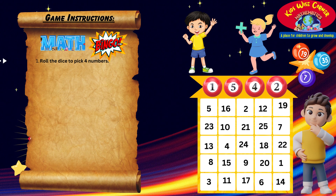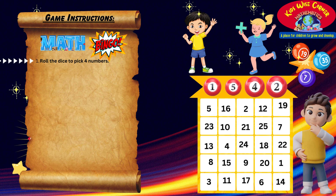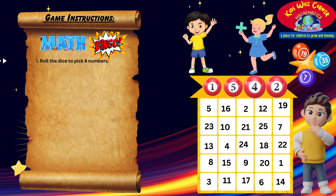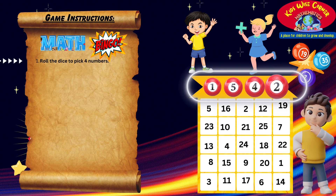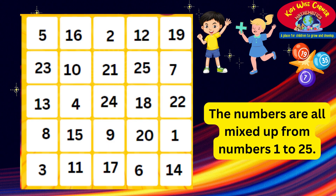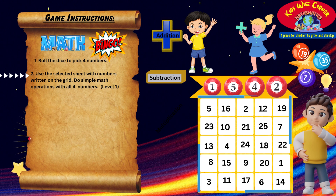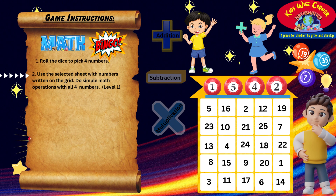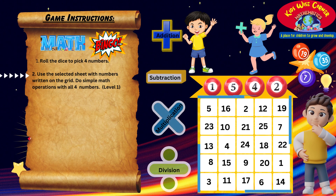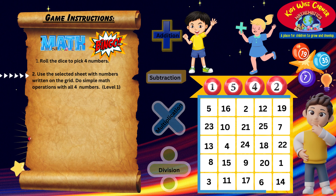Now we have our four numbers: one, five, four, and two. We have a sheet with numbers from one to 25 in a grid. For the first level of the game, we'll do some math with these four numbers. We can add, subtract, multiply, or divide them, but we have to use each number only once and find the answer.